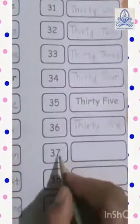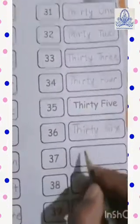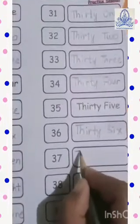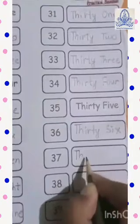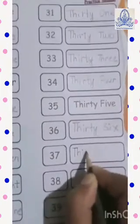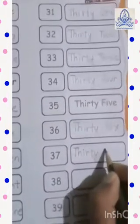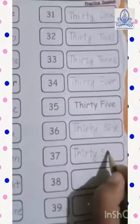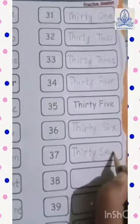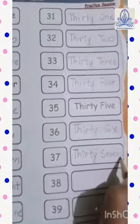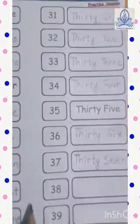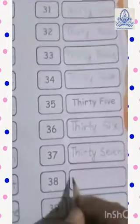Then 37 — T-H-I-R-T-Y S-E-V-E-N, 7 — 37. Thirty-eight: T-H-I-R-T-Y — 38.